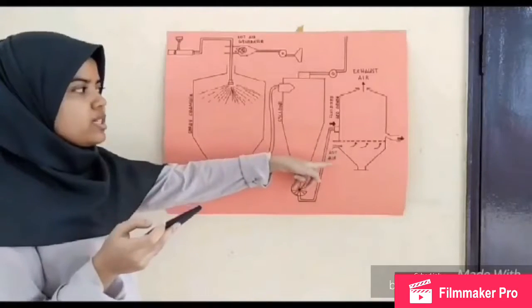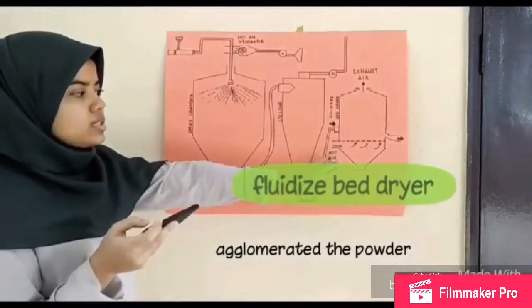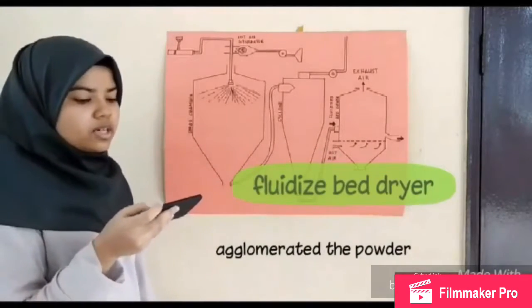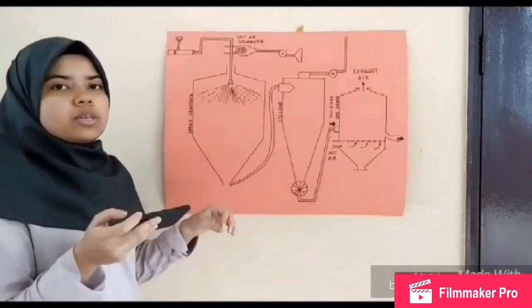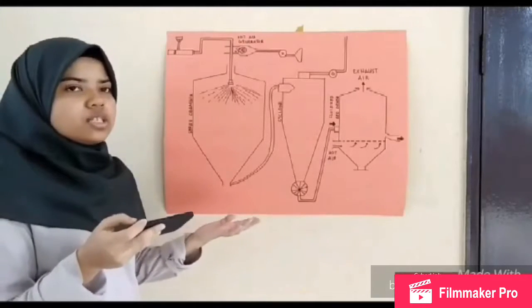First to the fluidized bed dryer. The fluidized bed dryer is used to agglomerate the powder. This is to improve the rehydration of the sour soup powder so it will be easily reconstituted in cold water.